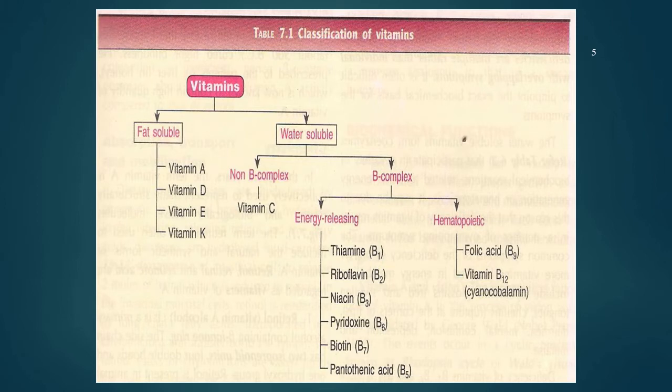In terms of classification, vitamins can be divided into two categories. The first one is fat-soluble vitamins, which are vitamins A, D, E, and K — remembered as ADEK. The second category is water-soluble vitamins, which are vitamins B and C.